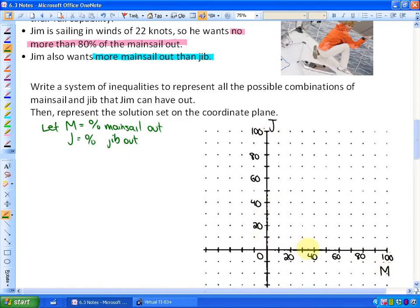Now what we are going to do is represent each of the constraints as an inequality. So if I look at this pink constraint, no more than 80% of the mainsail out, what that actually is, is that the mainsail has to be less than 80%, although that is slightly inaccurate. It says no more, so it can also equal 80%. There is one of the constraints, and we can actually take that into its entirety and go ahead and graph that inequality.